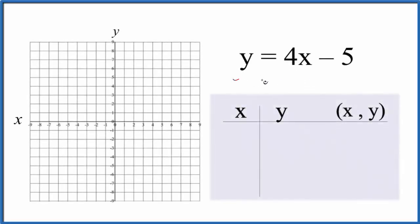Let's graph the linear equation y = 4x - 5. We're going to do this two ways: we'll use a table of values and then check our work with slope-intercept formula. The first thing we can do